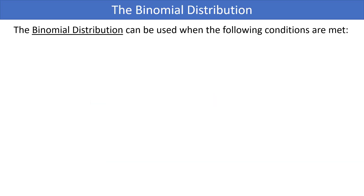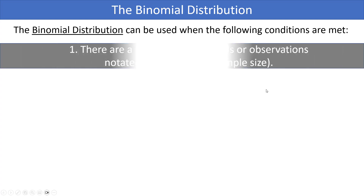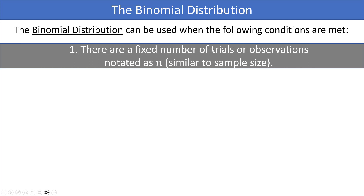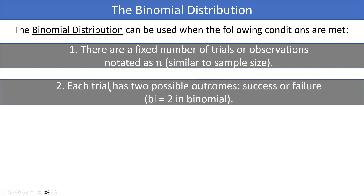The binomial distribution is a discrete probability distribution which can be used when the following conditions are met. Number one, there are a fixed number of trials or observations, notated as n, similar to a sample size. Number two, each trial has two possible outcomes, which we label as success and failure. This is where 'bi' comes from in binomial, because bi means two.